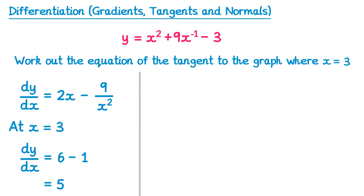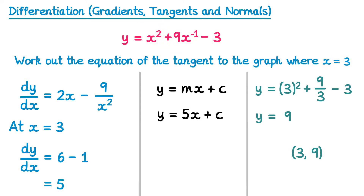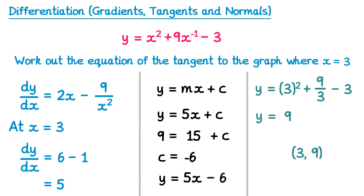The tangent is a straight line, so we write it as y equals mx plus c. We've found the gradient m equals 5. Now we need a point on the line. We substitute x equals 3 into the original equation: 3 squared plus 9 over 3 minus 3 equals 9 plus 3 minus 3 equals 9. So the point is (3, 9). Substituting into the line equation: 9 equals 5 times 3 plus c, giving c equals negative 6. So the equation of the tangent is y equals 5x minus 6.